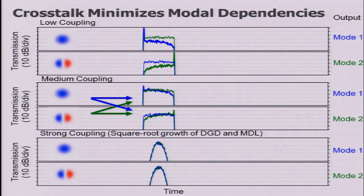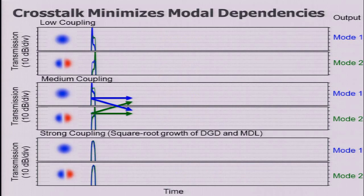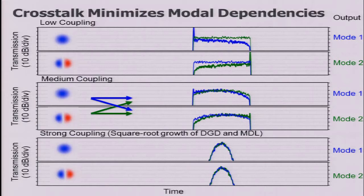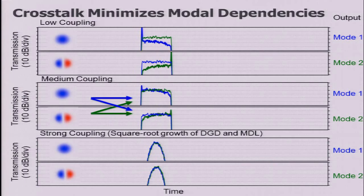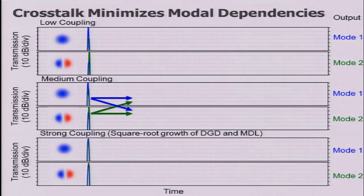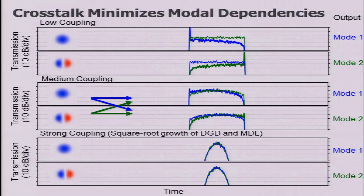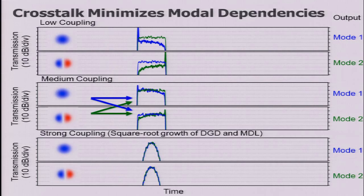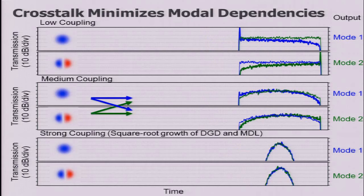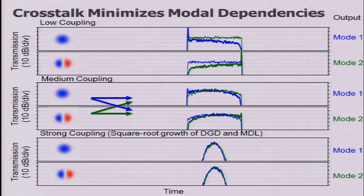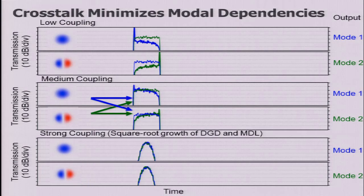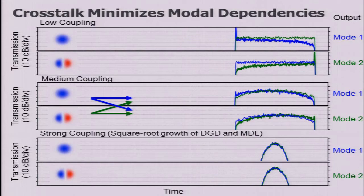Since coupling is probably always going to happen, is crosstalk actually bad? A lot of people are saying that crosstalk is actually good because it can minimize mode dependencies. With low coupling you get large plateaus in the transfer function. With median coupling, the plateaus start to disappear and the transfer functions become more rounded. With very strong coupling, the light never stays in one mode and cannot accumulate a lot of differential delay — the DGD grows by a square root dependence with distance rather than linear. The same applies to mode-dependent gains and losses. The conclusion: weak coupling is difficult to deal with, but strong coupling might actually be beneficial.